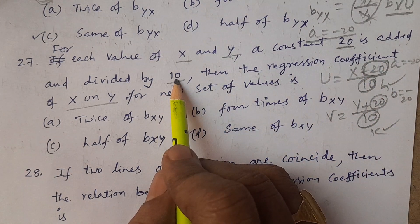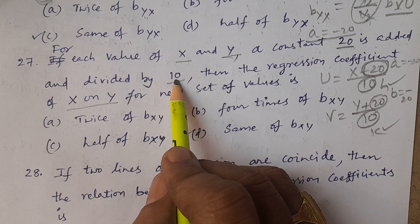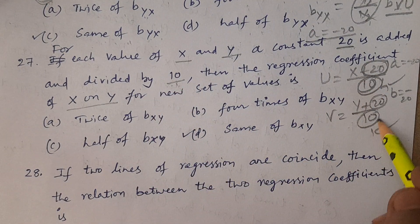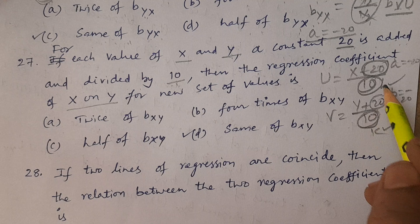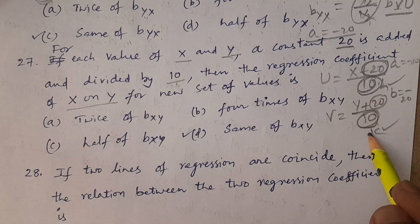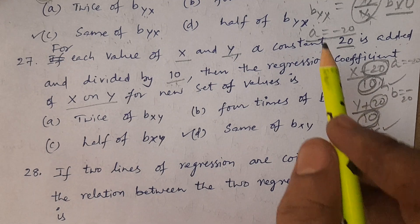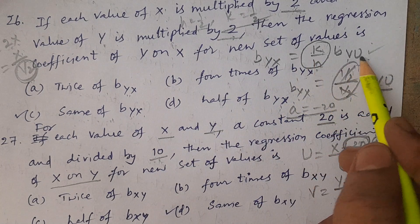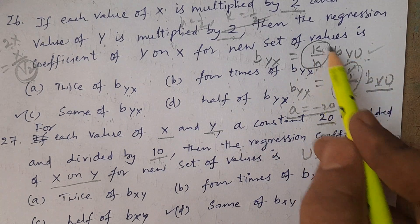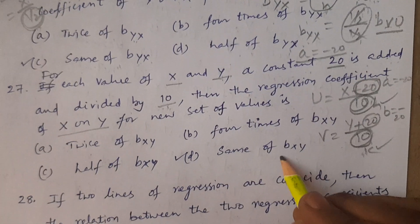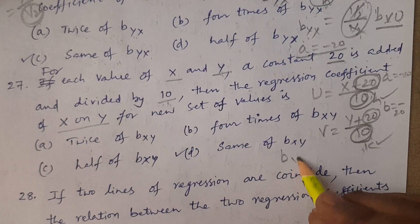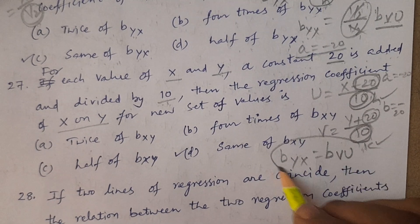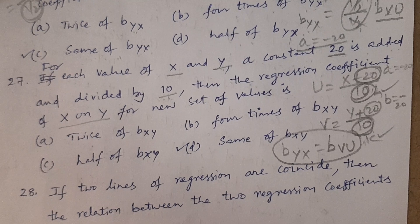For dividing by 10, also do not change, because h is equal to 10 and k is equal to 10 — h and k are equal, same. By substituting in the formula: byx equals k by h into bvu — 10 by 10 will cancel. Therefore byx is equal to bvu. Do not change.